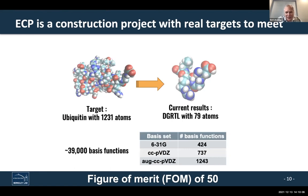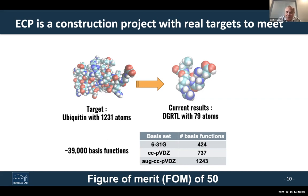The Exascale Computing Project is a construction project within the Department of Energy, which means we have to meet real targets. Our target system is ubiquitin — 1,200 atoms, about 40,000 basis functions. Our target is what they call a figure of merit of 50, which roughly means a performance improvement of about a factor of 50 over the codes we have had so far.